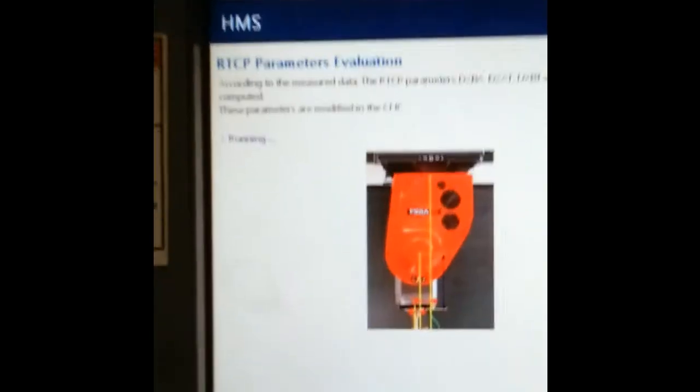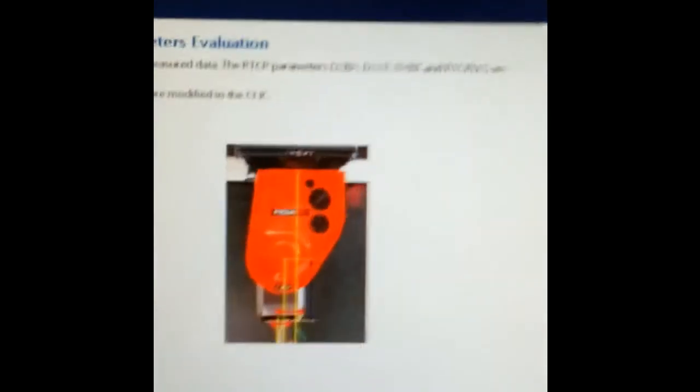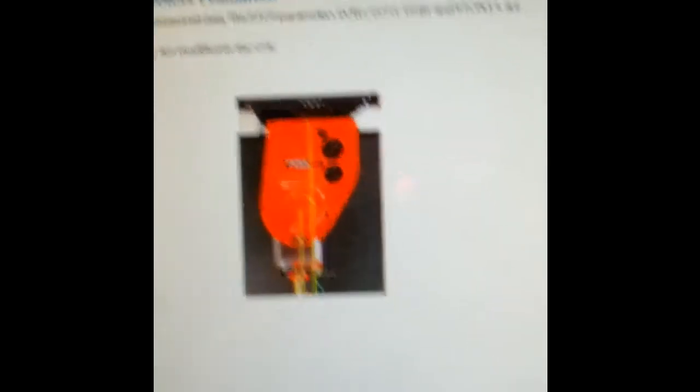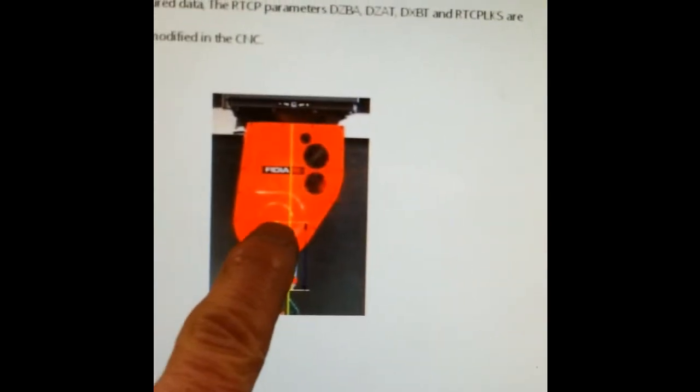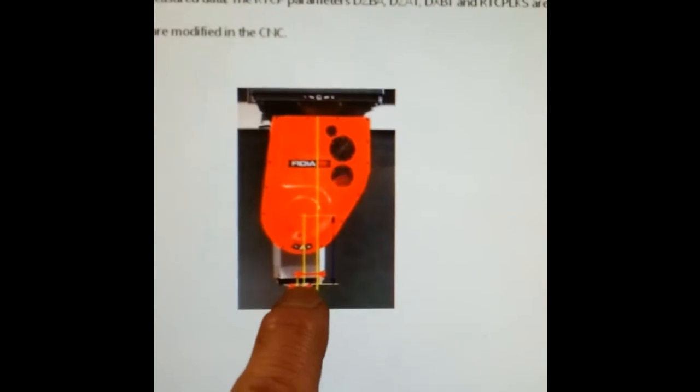One of the things that it calculates is the RTCP LKS, which if you look here, that's from the center line of the head to the face of the spindle.